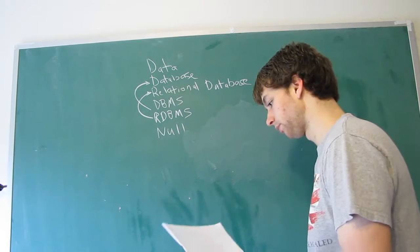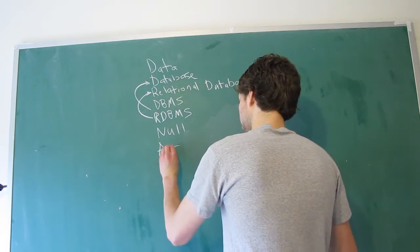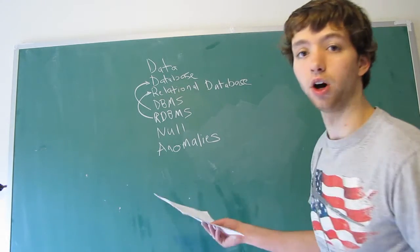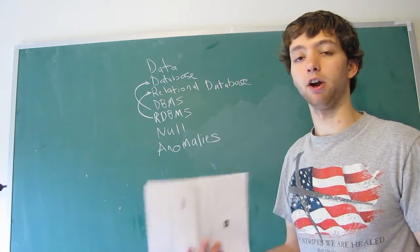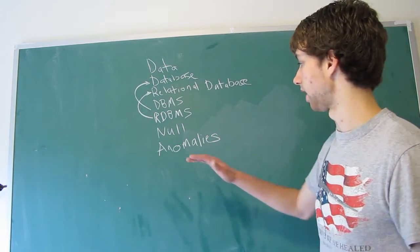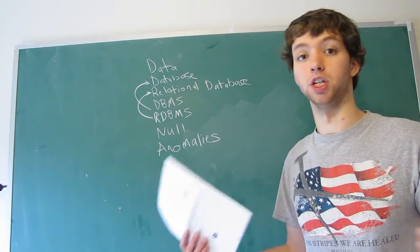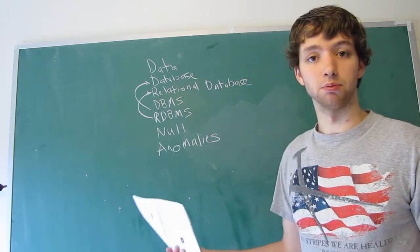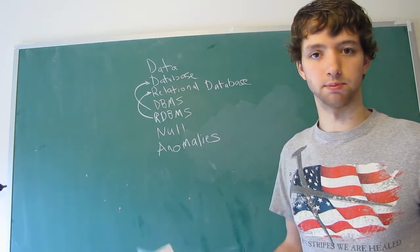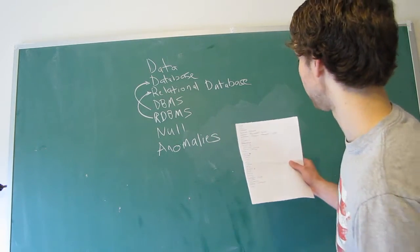That's one you will need to know. Another one is an anomaly or anomalies. So anomalies are basically errors within our data integrity. So when we have an anomaly, it's something that goes away from what we expect or from the normal. When we update something, for example, and instead of updating one column, it updates 10 and it wasn't supposed to. That's an anomaly. You'll need to know that as well.